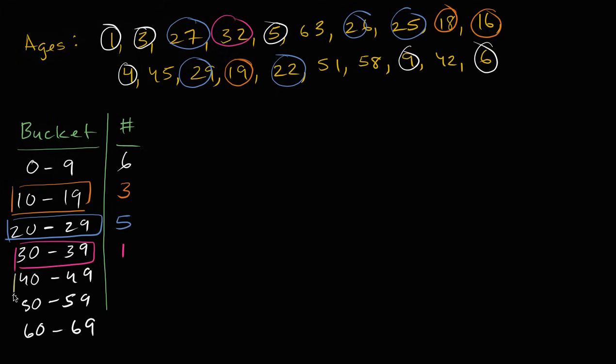All right. What about 40 to 49? We have one, two people. Two people are in that bucket. And then 50 to 59. So you have one, two people. Two people. And then finally, ages 60 to 69, there is one person right over there.